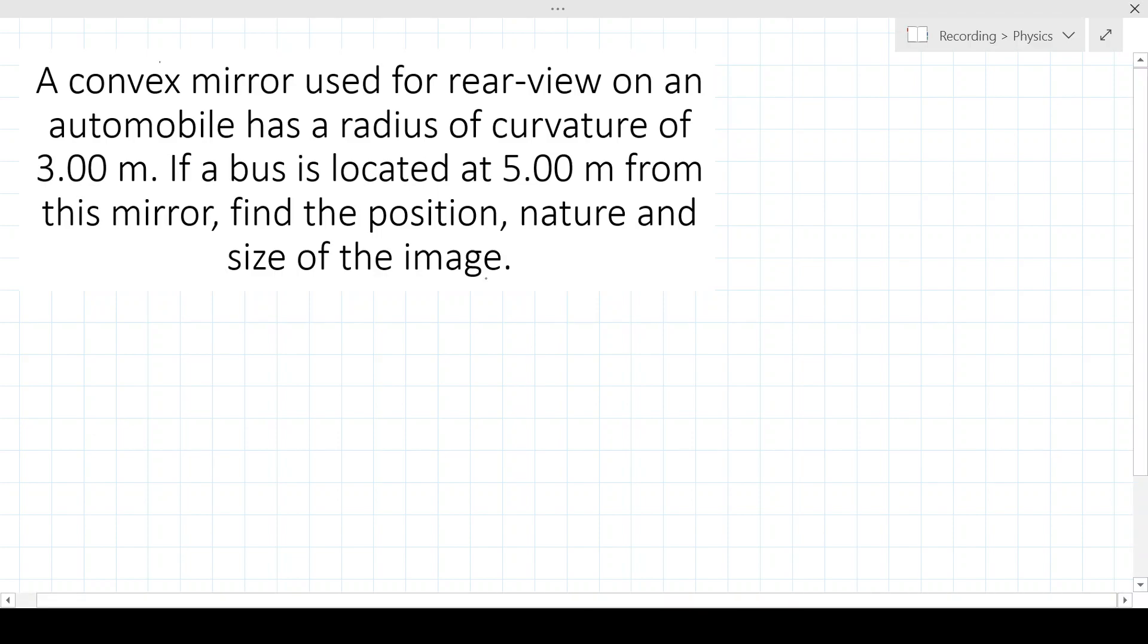Hello everyone, today we are going to solve a question from physics chapter light. The question is, a convex mirror used for rear view on an automobile has a radius of curvature of 3 meters. If a bus is located at 5 meters from the mirror, find the position, nature and size of the image.